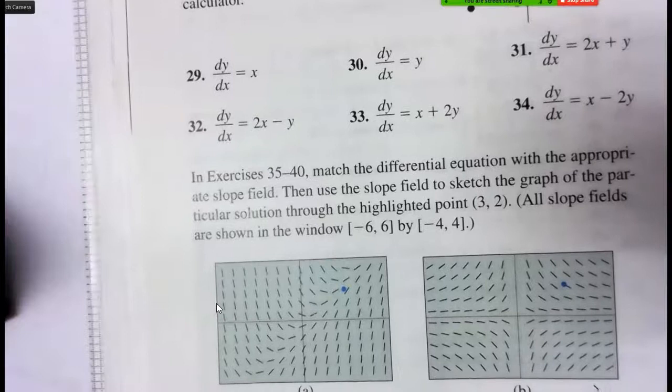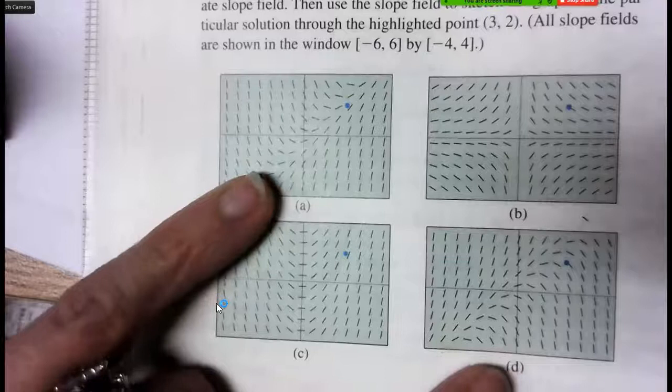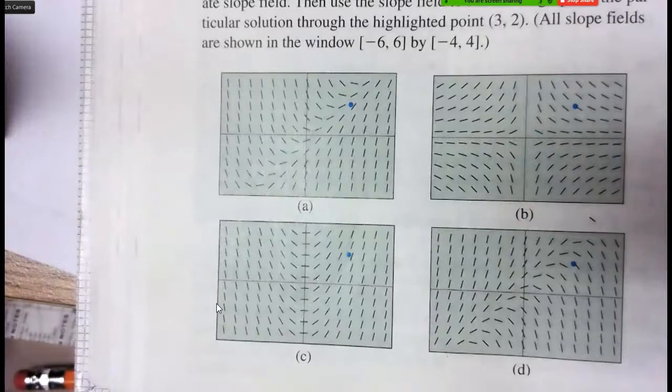So like you can see d and a are totally flips of each other, so d and a are going to match to 37 and 38 because they're just going to be the flip of that equation. So you can see how 37 and 38 equations are flipped.